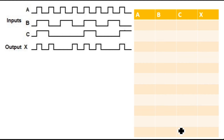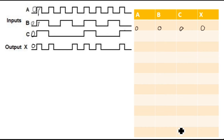Please like and subscribe my channel. Let's start. Initially A is 0, B is 0, and C is 0, and you are getting X is 0. So let's write: A=0, B=0, C=0, and X=0. At the next clock, A is 1, B is 1, C is 1, and X is also 1. So we write: A=1, B=1, C=1, X=1.